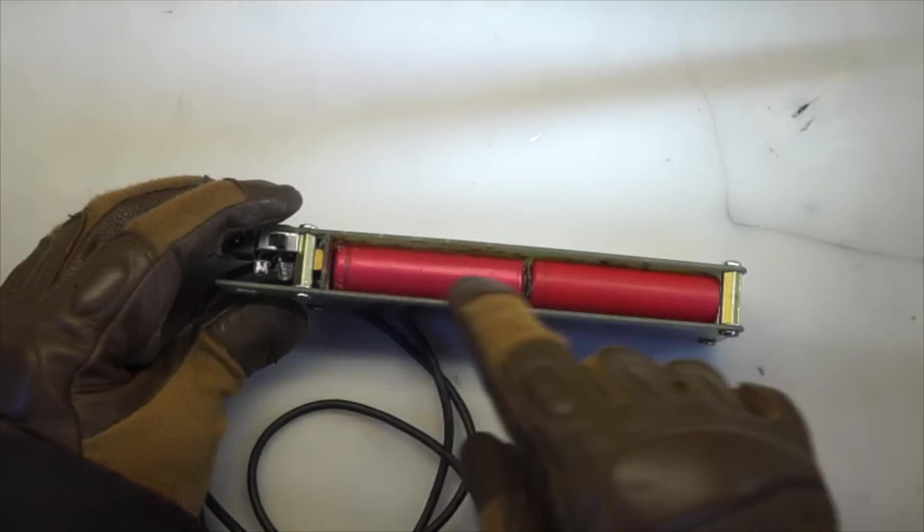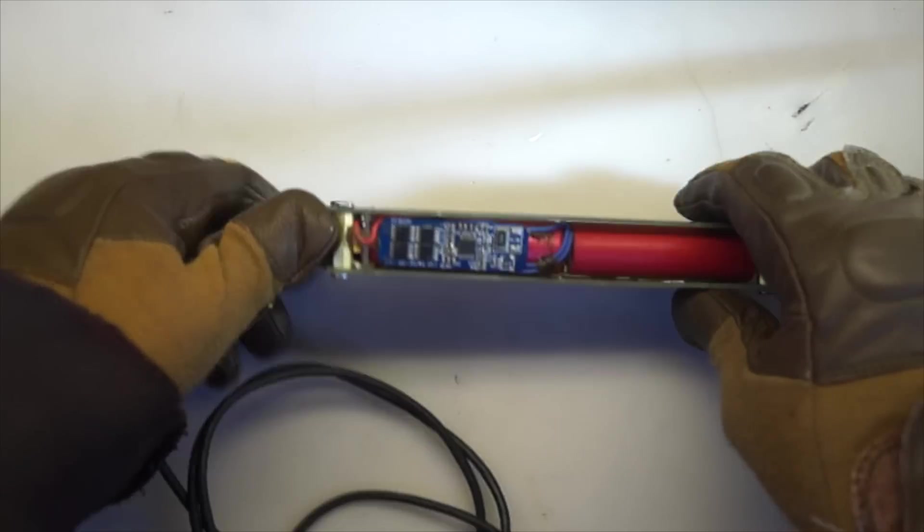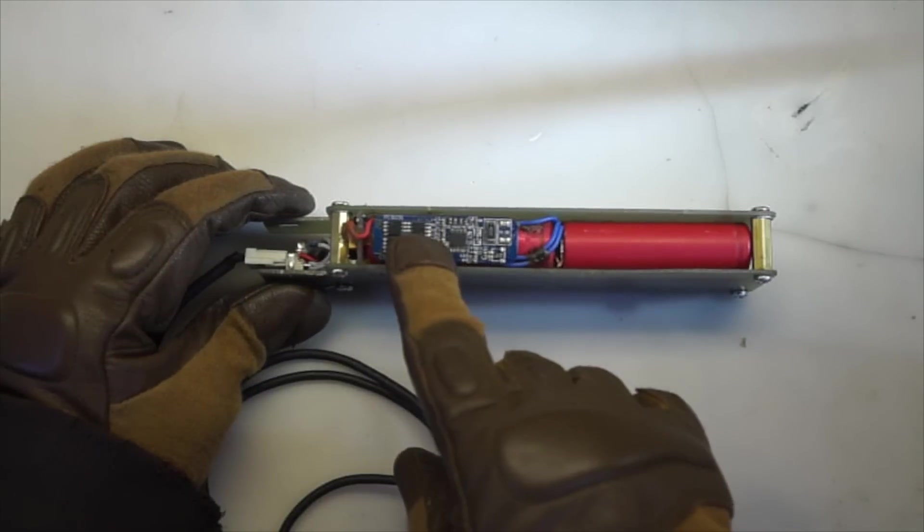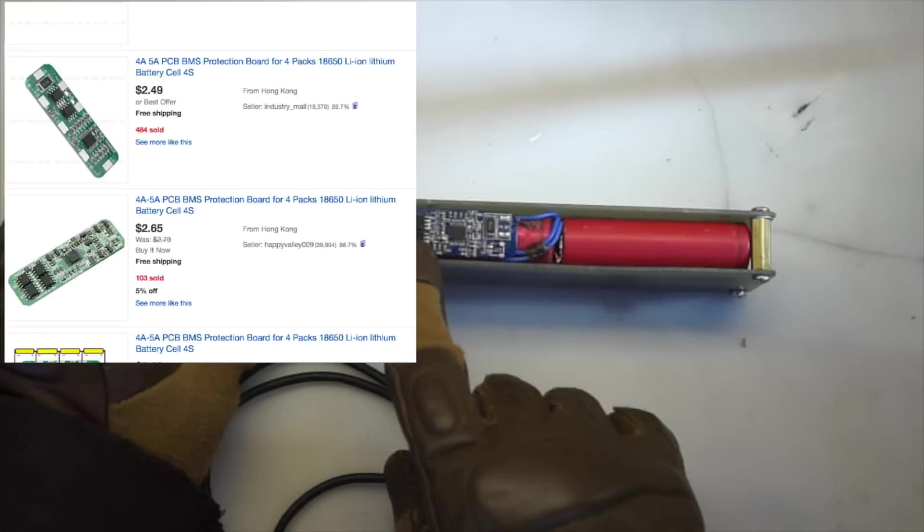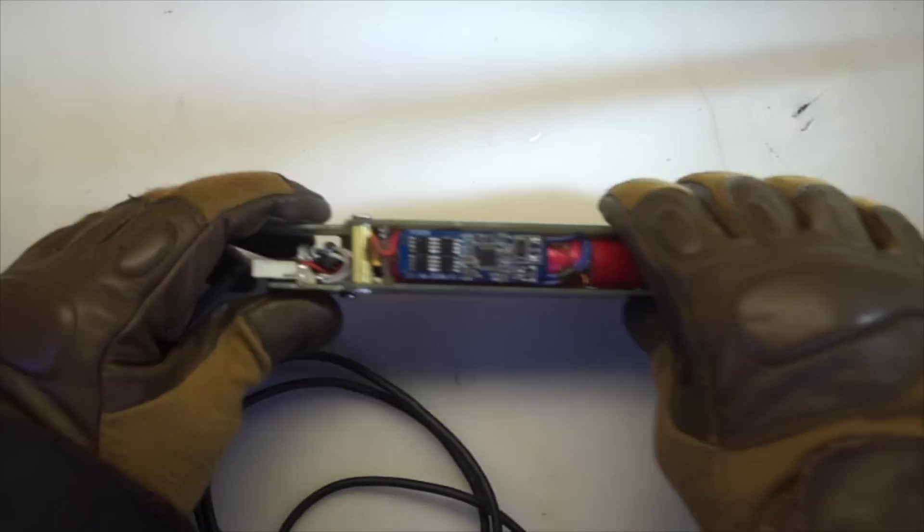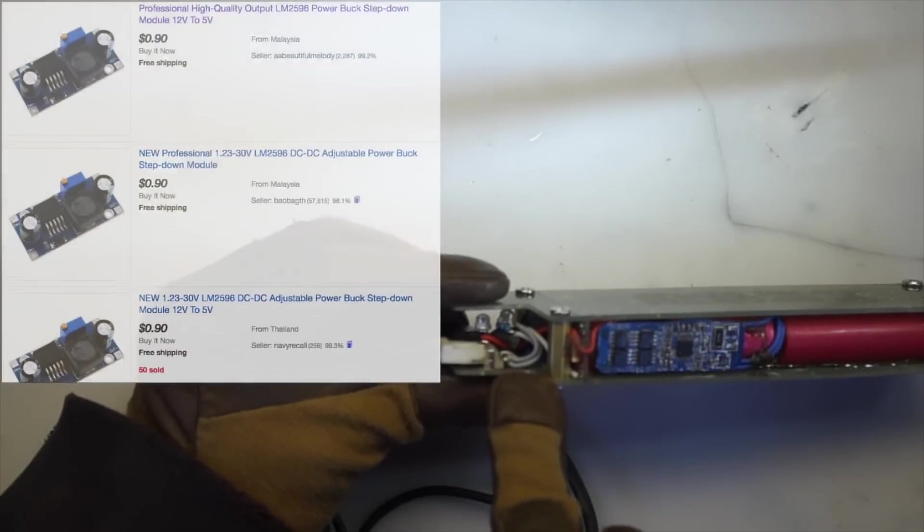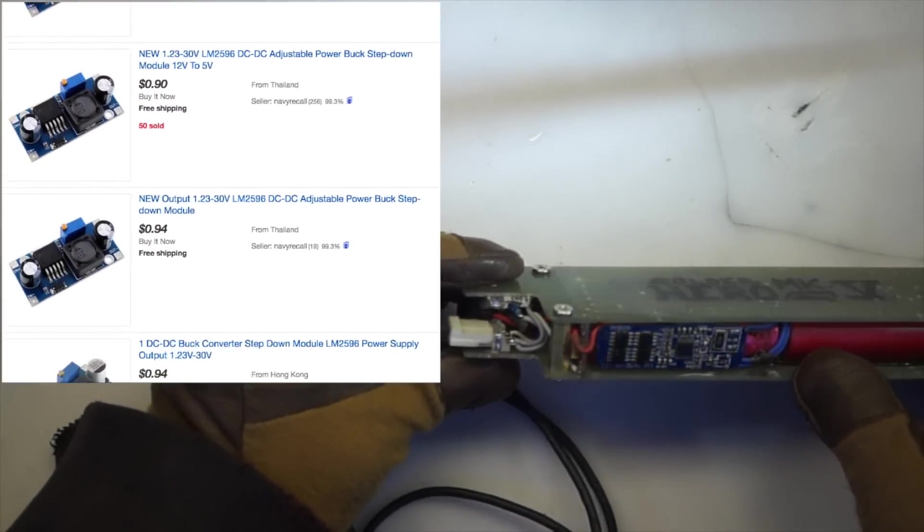Now inside, I've got four of these 18650 laptop cells, and I'm keeping them all happy using one of these generic eBay battery protection circuits. Last time I checked, these are still about $2 with free shipping. Inside, I've got a 3-amp buck mode regulator, and that's again about $1 on eBay.